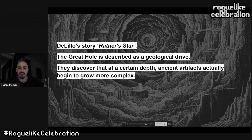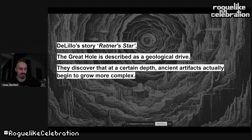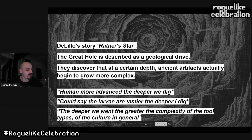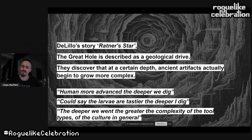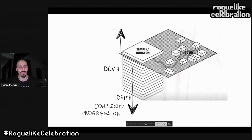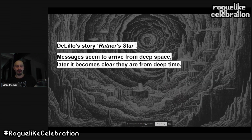At a certain depth in Ratner's Star, they discover that ancient artifacts begin to grow more complex — which is interesting because real geology works the opposite way: things actually get more primitive the deeper you go. The quotes illustrate this inversion: 'The deeper we dig, the greater the complexity of the tool types and the culture in general.' This reminds me of how progression works in roguelikes — the deeper you go, the more complex everything is.